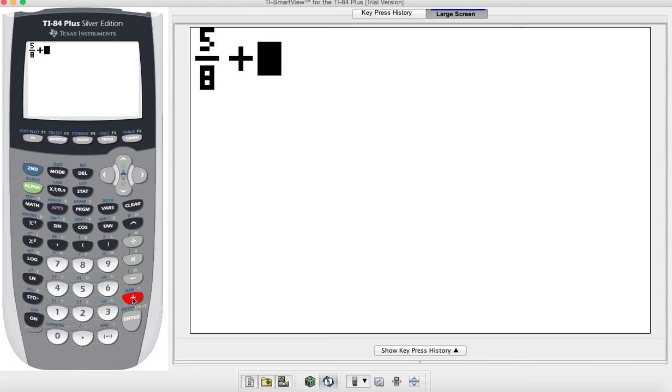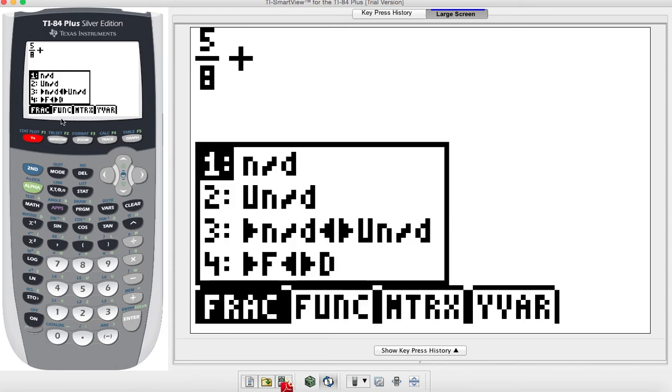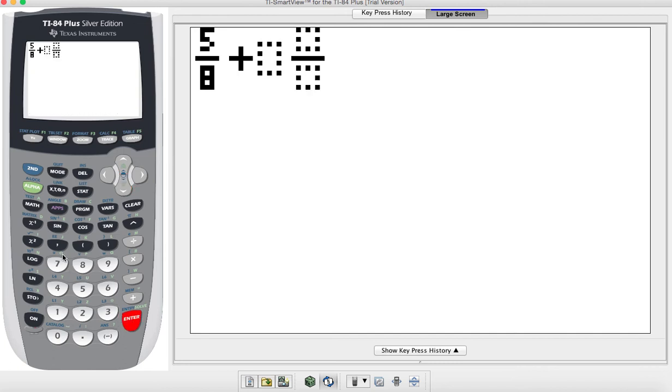Let's say I want to add that 5 eighths. So I'm going to add 5 eighths to, let me select the other fraction. This time we'll use a mixed number. So I'm going to select the second option by hitting down on the arrow key, and I'm going to use 4 and 3 fourths.